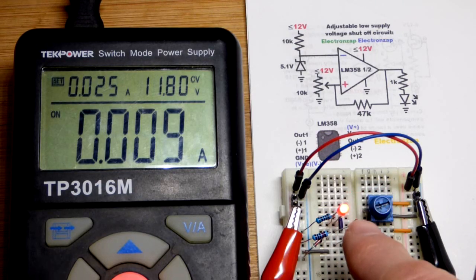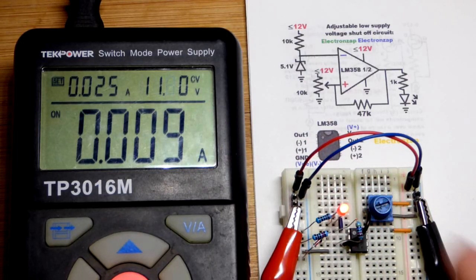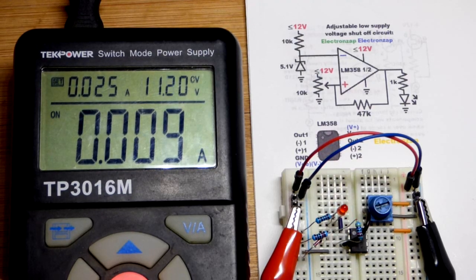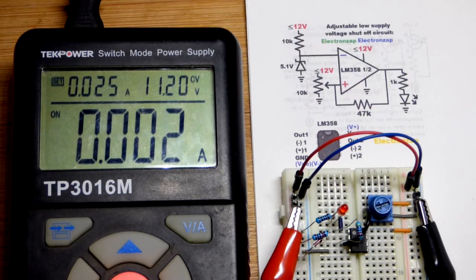I'm just using a power supply to simulate a battery voltage right now. I set this to be somewhere around 11 volts. This isn't high precision or anything. There you go, LED turned off.